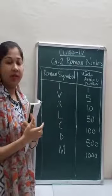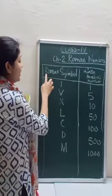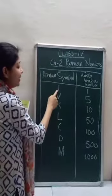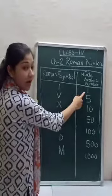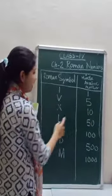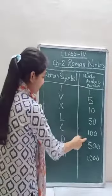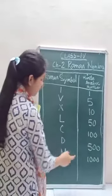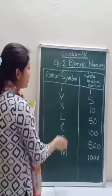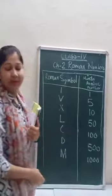Roman Numbers you have already learned in your previous class. So here is the table of Roman Symbol and Hindu-Arabic Symbol. I denotes 1, V denotes 5, X denotes 10, L denotes 50, C denotes 100, D denotes 500, and M denotes 1000. So it is the table of Roman Symbol and Hindu-Arabic Symbol.